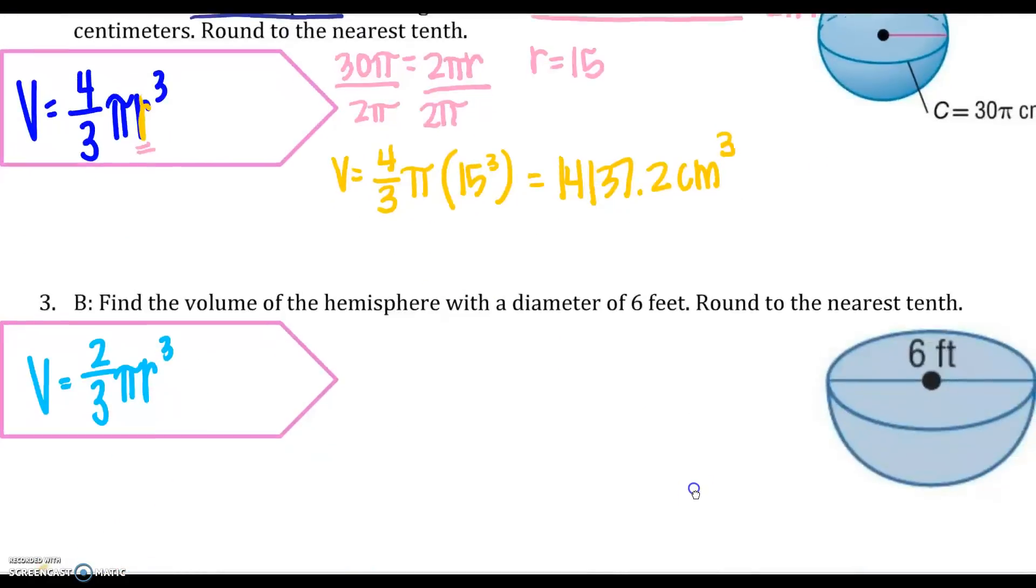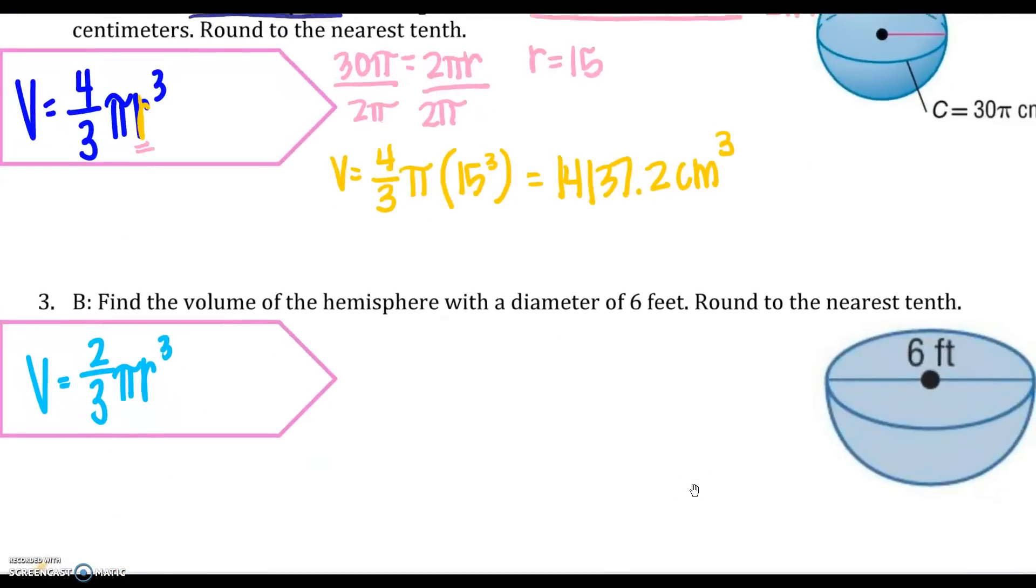All right, moving on. Find the volume of a hemisphere if my diameter is 6 feet. So your diameter is 6 feet. But in your formula, you only need your radius. So that would be 3. 3 would go there. So just following your formula. 2/3π(3³).